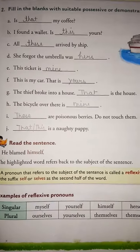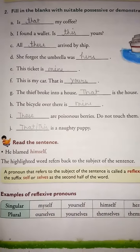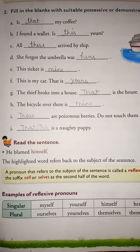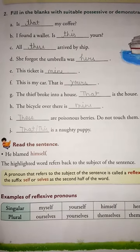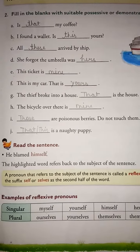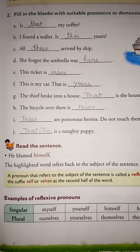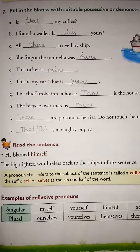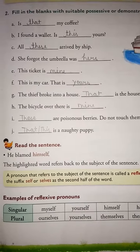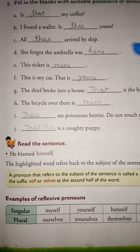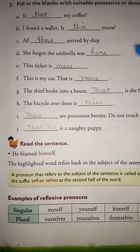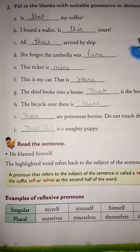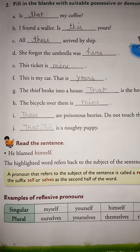The last type we have is reflexive pronouns. A pronoun that refers to the subject of a sentence is called a reflexive pronoun. It has a suffix 'self' or 'selves' as the second half of the word. For example, 'he blamed himself' — this is an example of a reflexive pronoun.